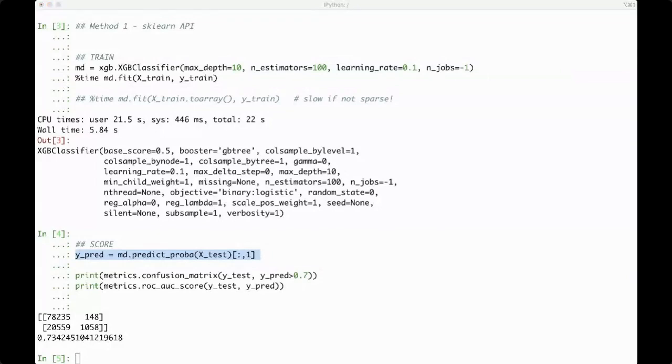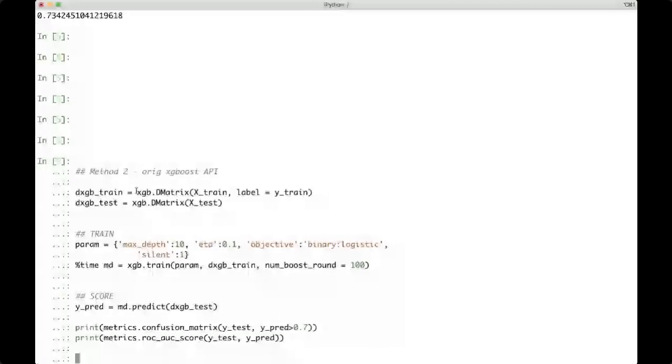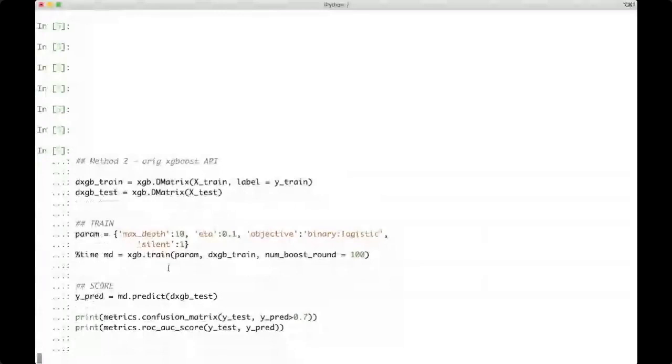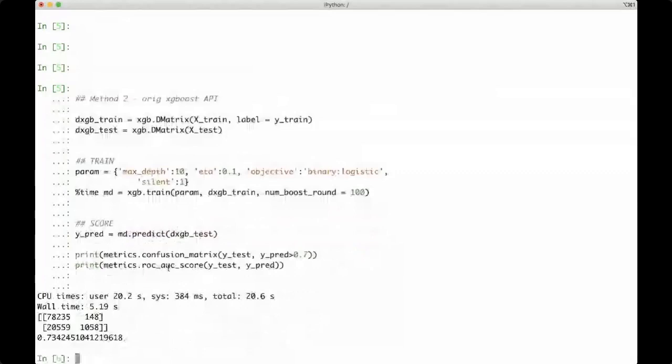All right, so there is also a so-called original XGBoost API that's the one that was before the scikit-learn one. You can use that. It looks like this. You create these matrices. Otherwise, the scikit-learn API is creating these matrices behind the scene. And then the original, the traditional way of running XGBoost in Python is this. It's going to give the same results. So it's whatever API you prefer.